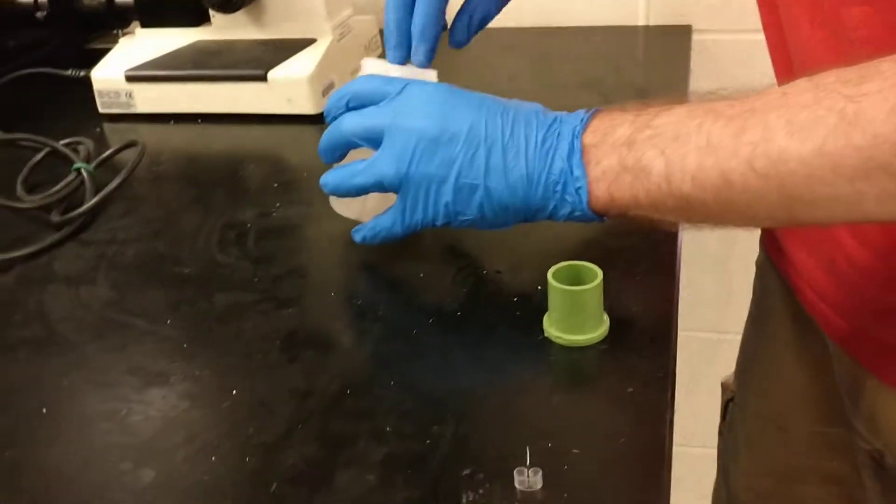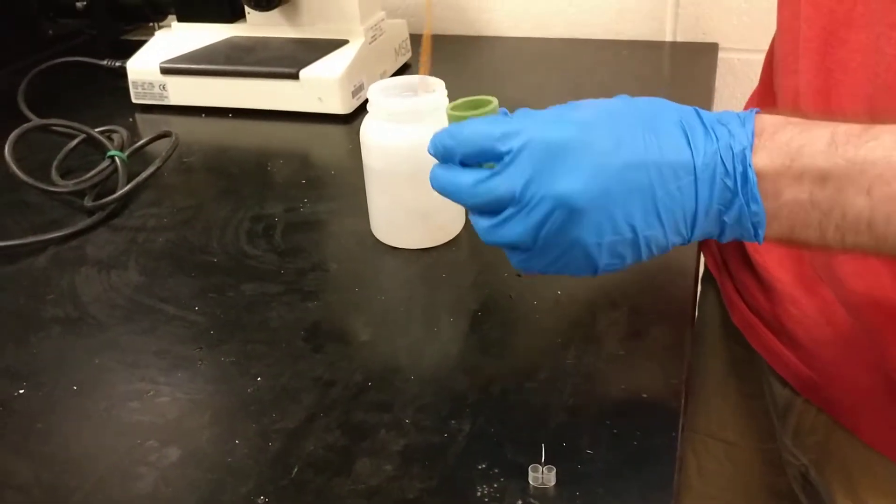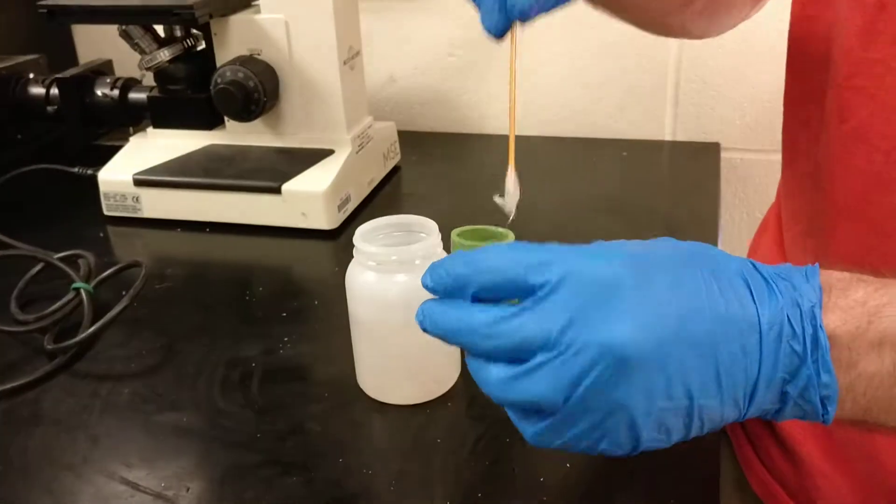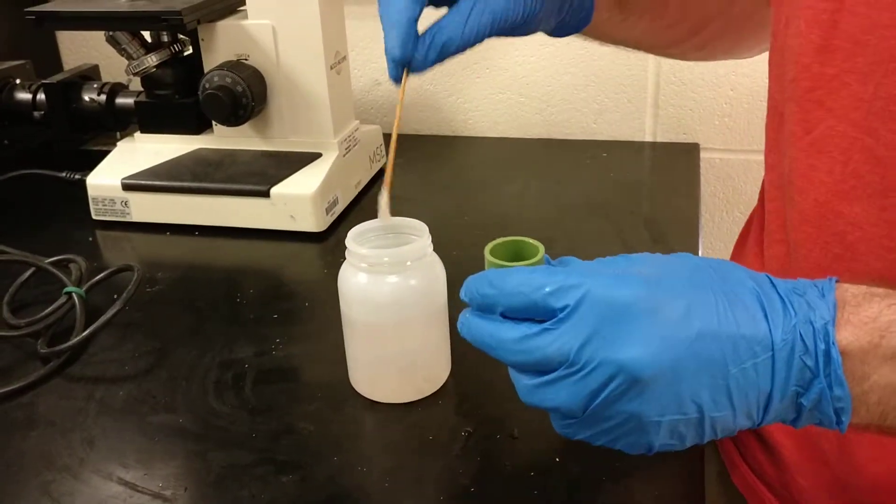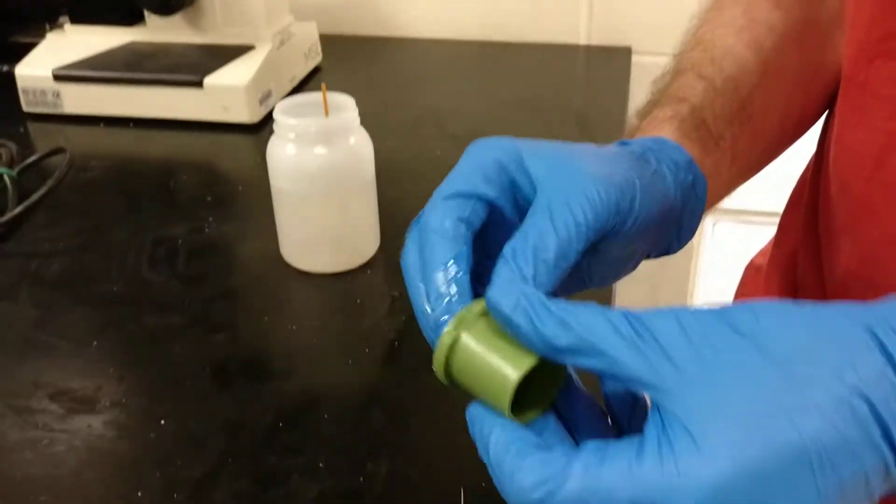We're actually going to oil the mold first. There's a lot of oil on here, just need a very tiny amount, so try to get a small amount on the inside of this cup. That will act as a release agent.